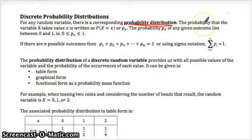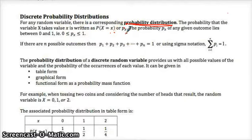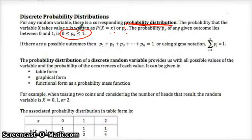The probability that the variable x takes value x is written in this form. Or you could write p sub x. The probability of p sub x of any given outcome is going to lie between zero and one, because you have a zero percent chance of something happening and a 100 percent chance of something happening. So your probabilities are always fractions between zero and one, or decimals, or we can refer to them as percents. But here we're going to keep them in fraction or decimal form.